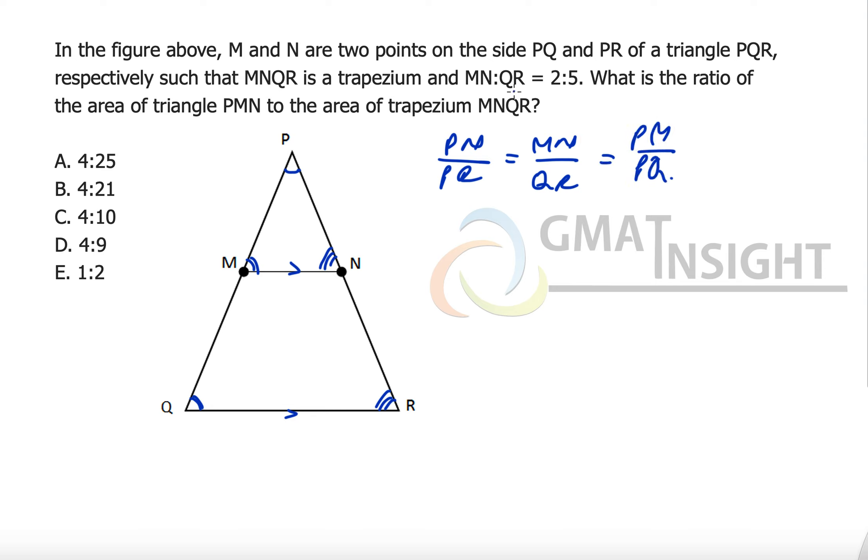Now MN over QR is equal to 2 by 5. So the ratio of the sides is 2 by 5. Let's assume if it is 2x then it is 5x.